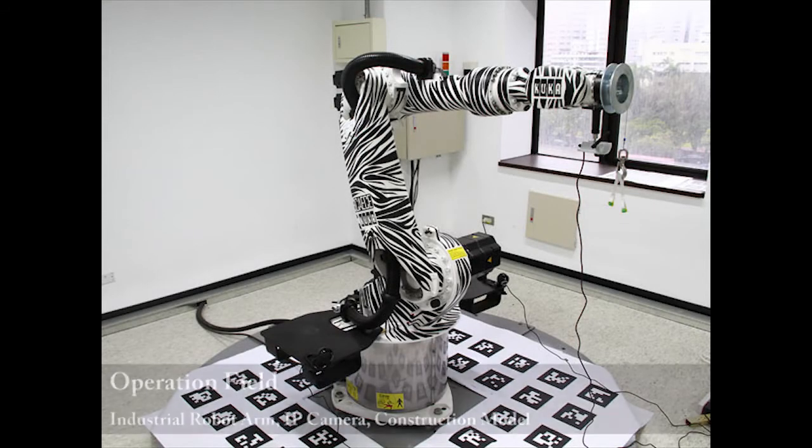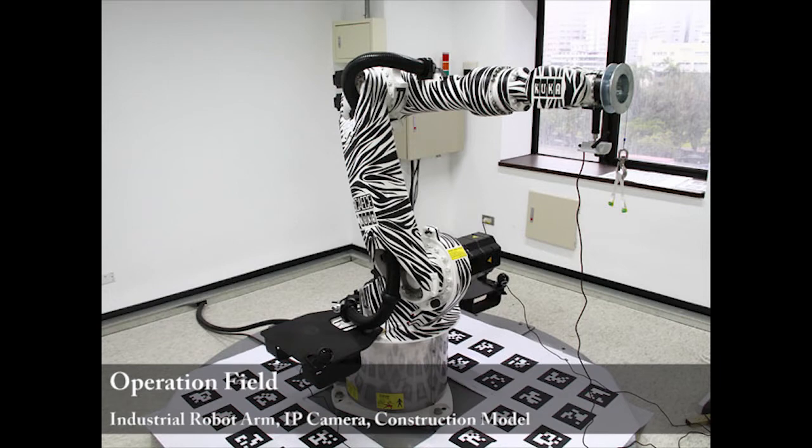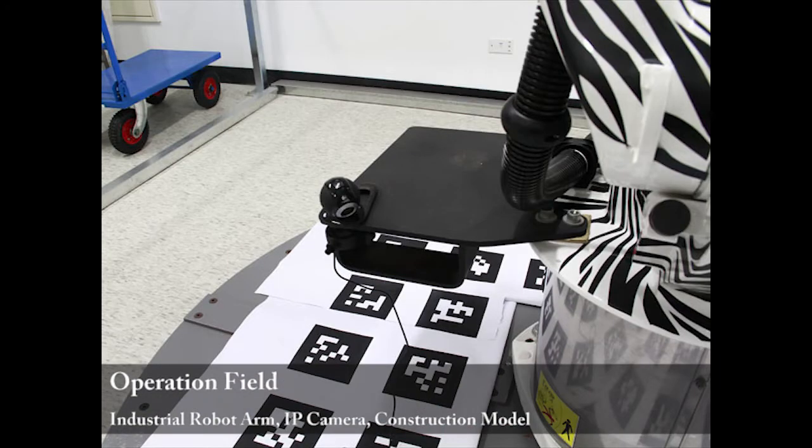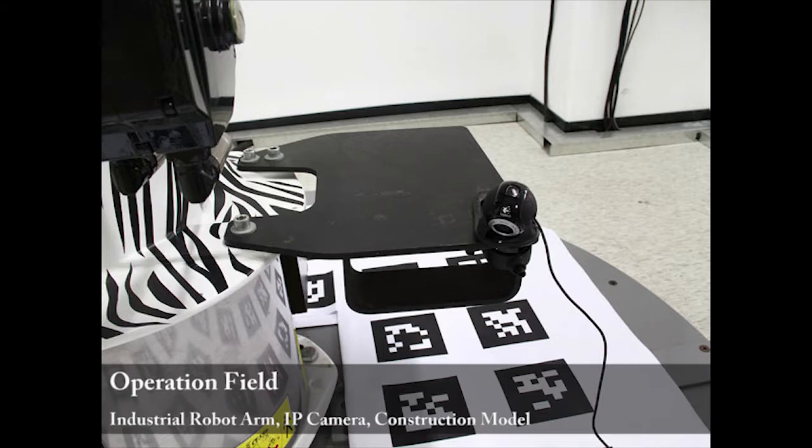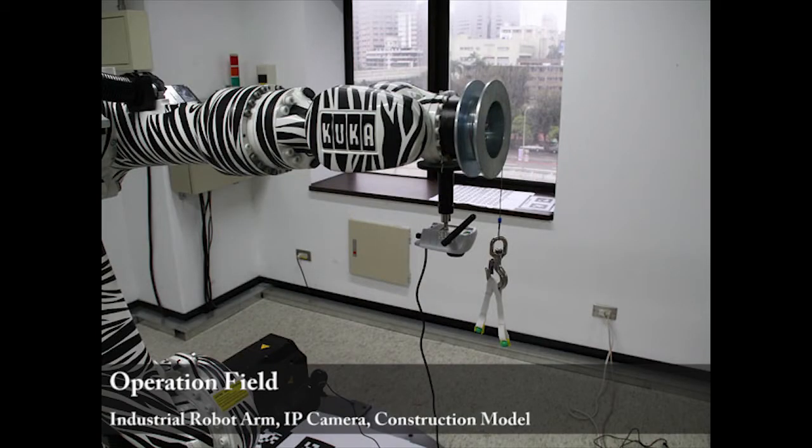We integrated an industrial robot arm, KUKA KR16CR, on the construction field, which has rigid body components and 6 degrees of freedom to simulate the current structure and movement of the crane.